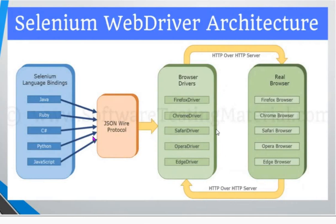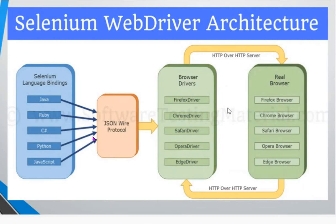The browser drivers then use HTTP protocols to interact with the actual browser. Every browser has its own browser-specific driver that communicates through HTTP protocols. The client libraries communicate with the drivers using JSON Wire Protocol, and the browser driver and real browser communicate using the W3C standard. This is how Selenium 3 architecture worked.